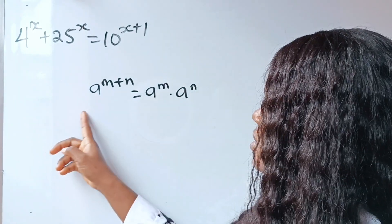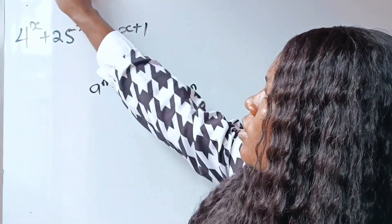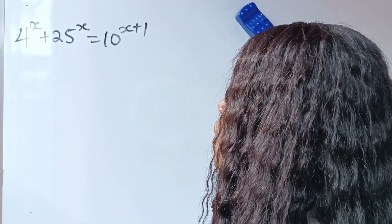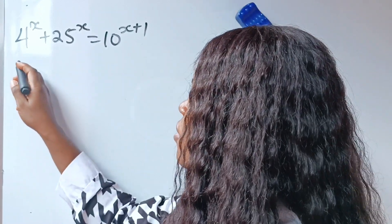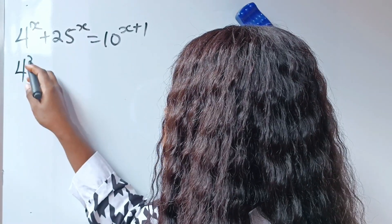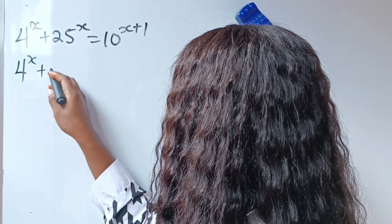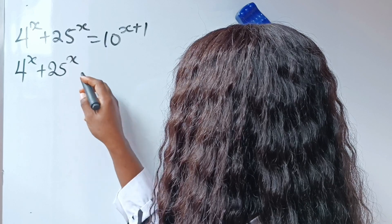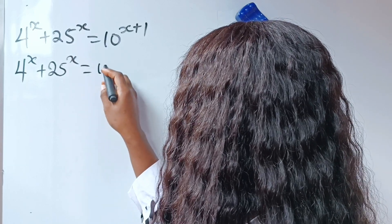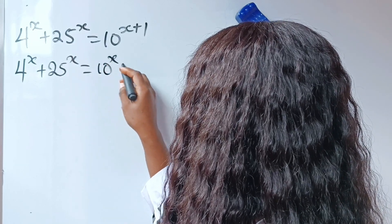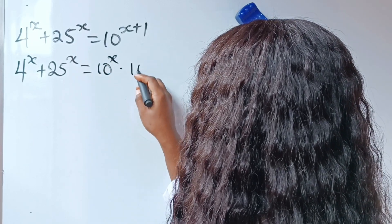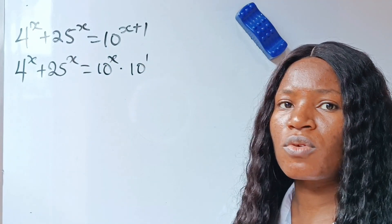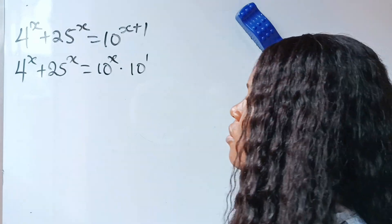So we are going to apply this law here. When we do that, we have 4 to the power of x plus 25 to the power of x is equal to 10 to the power of x multiplied by 10 to the power of 1, which is still 10.